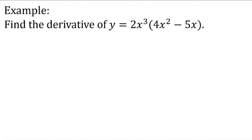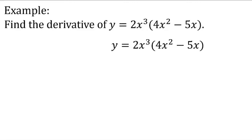What do you think is the first thing to do here? Kenneth? A student suggests that since there is a parenthesis and a term outside, we should distribute first. So we will multiply 2x cubed to 4x squared minus 5x. This will become y equals 8x to the fifth minus 10x to the fourth.